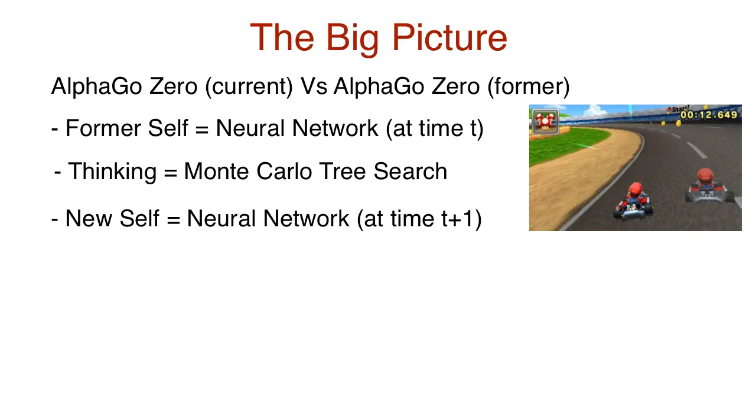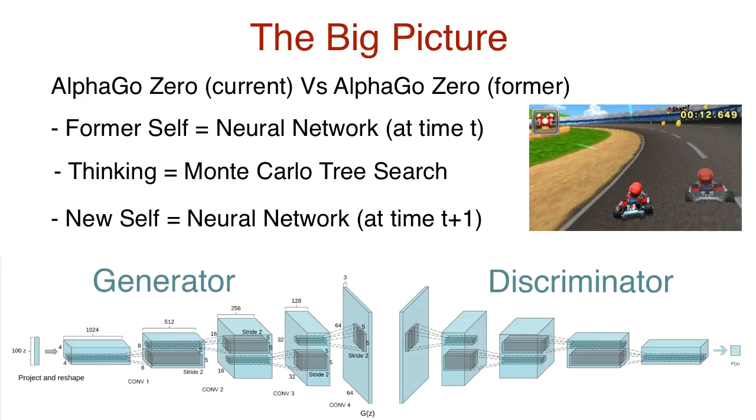I would say the concept is more similar to GANs, Generative Adversarial Networks, where the generator gets better at fabricating data, and the discriminator gets better at recognizing fabricated data. And these models help each other improve over time.